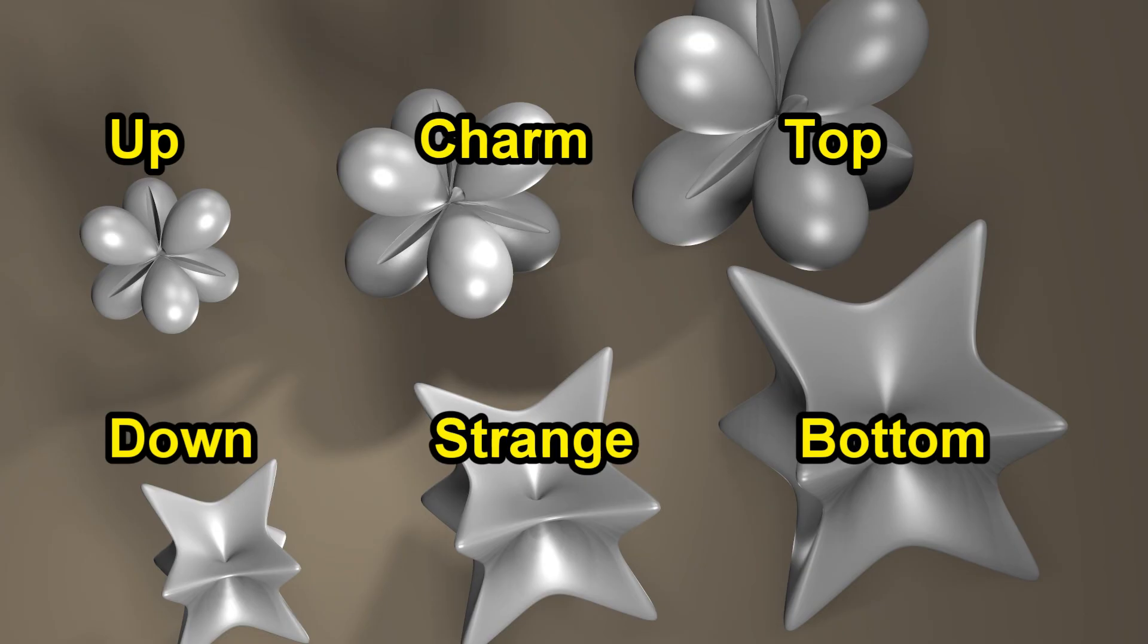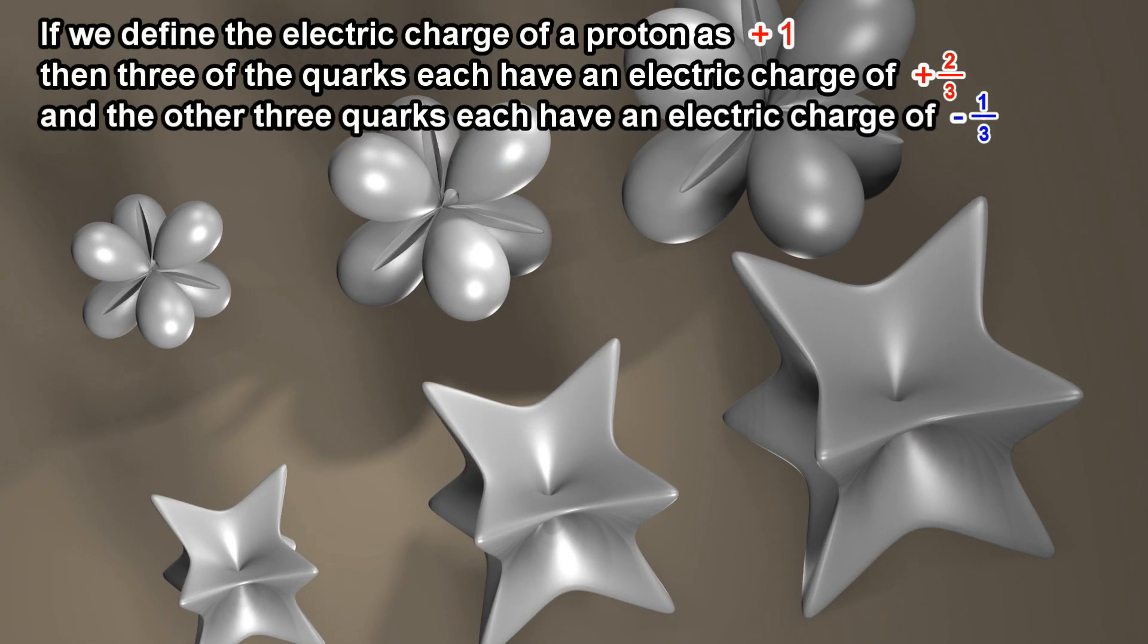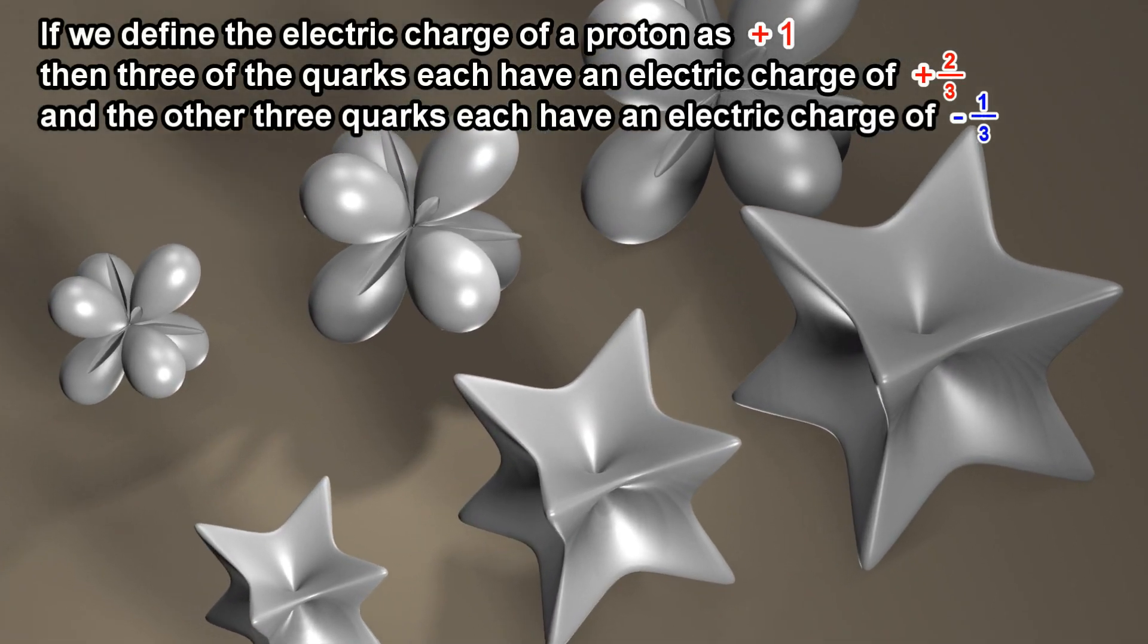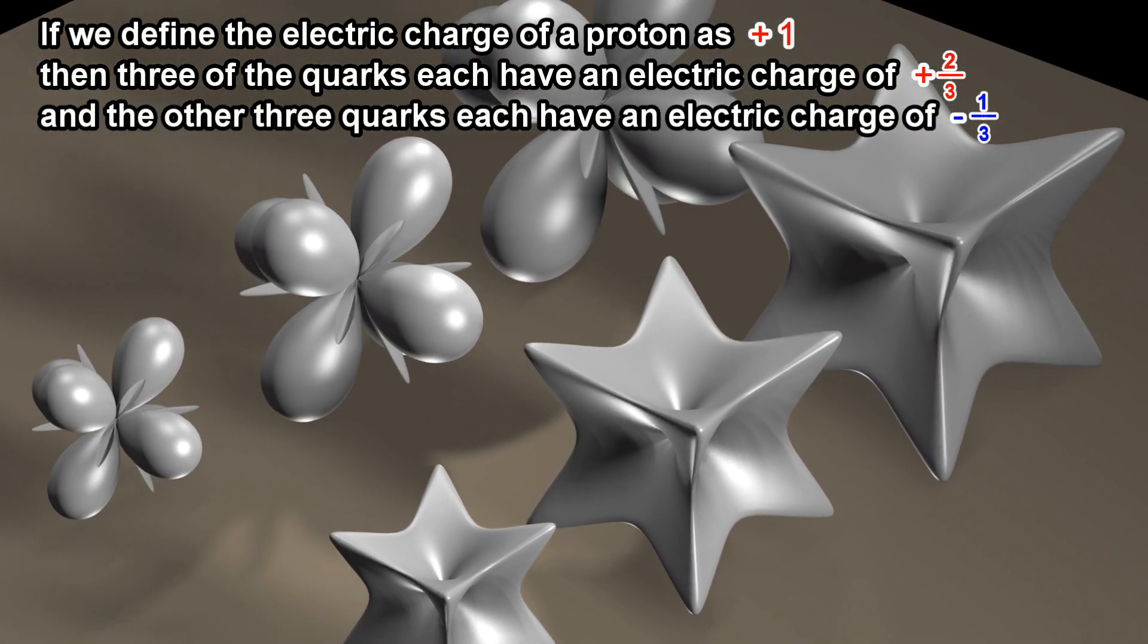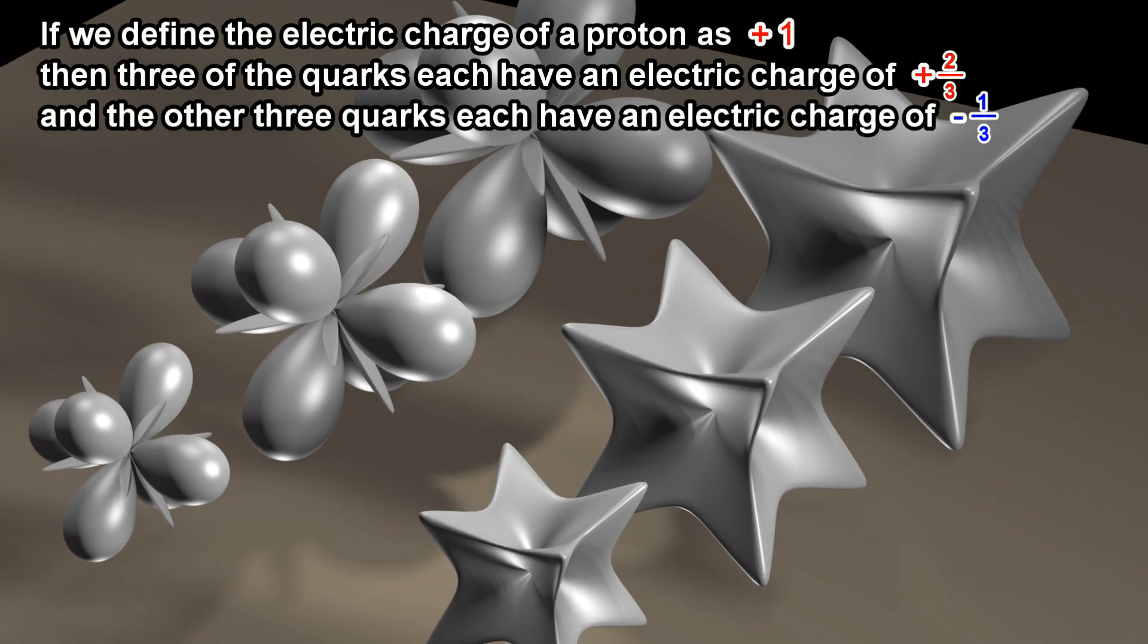If we define the electric charge of a proton as positive one, then three of the quarks each have an electric charge of positive two-thirds, and the other three quarks each have an electric charge of negative one-third.